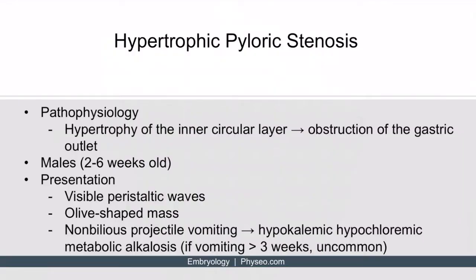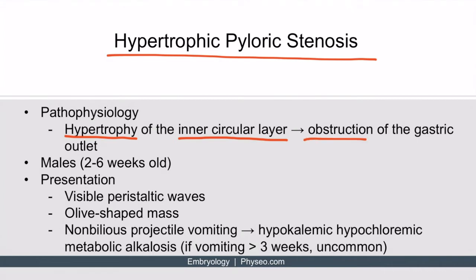The first foregut pathology we'll discuss is hypertrophic pyloric stenosis. This condition occurs because there's hypertrophy of the inner circular layer of the GI tract at the point of the pylorus, and this leads to obstruction of the gastric outlet. In other words, there's so much hypertrophy that substances in the stomach can't pass through the pylorus.